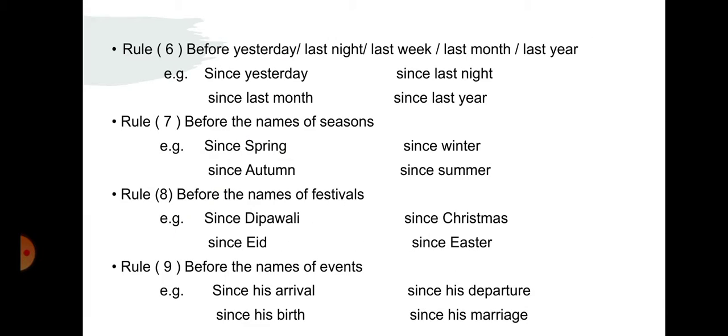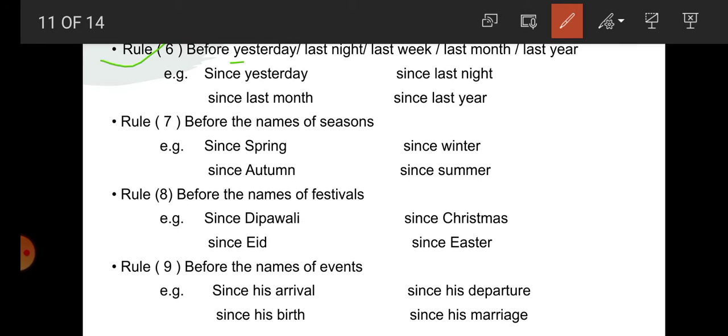Rule number 6: before yesterday, last night, last week, last month, last year. Yesterday is a definite day, last night is definite, last week is a definite week, last month is a definite month, last year is a definite year. That's why since is used before these words. For example: since yesterday, since last month, since last night, since last year.